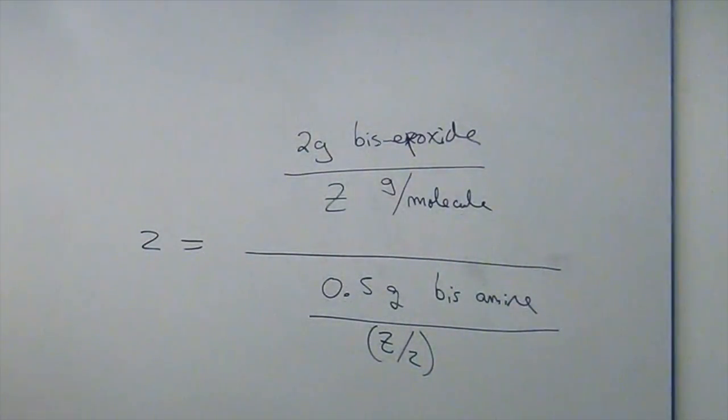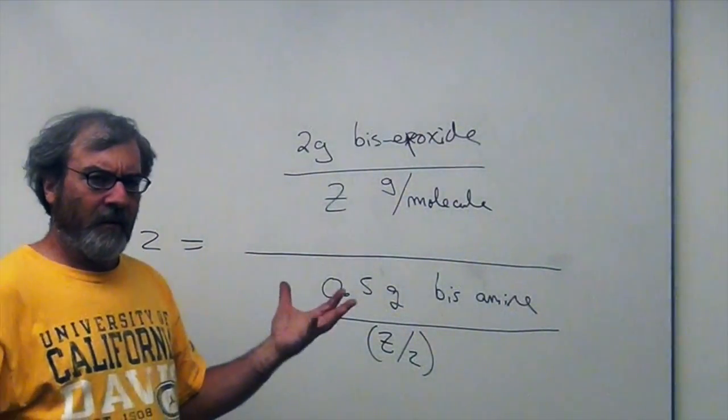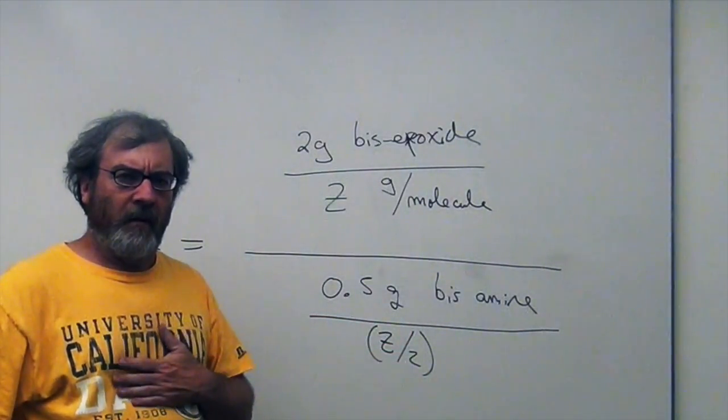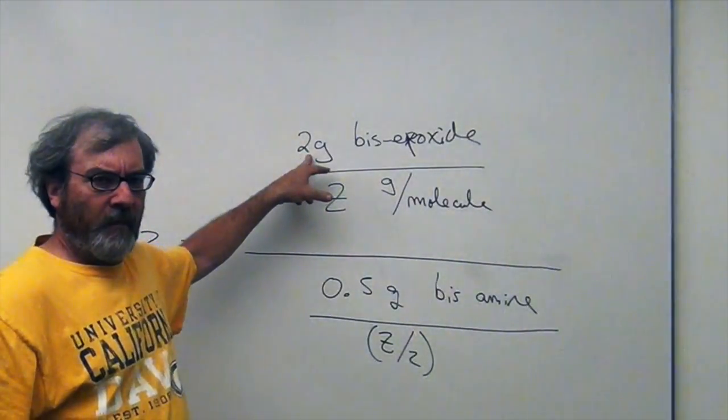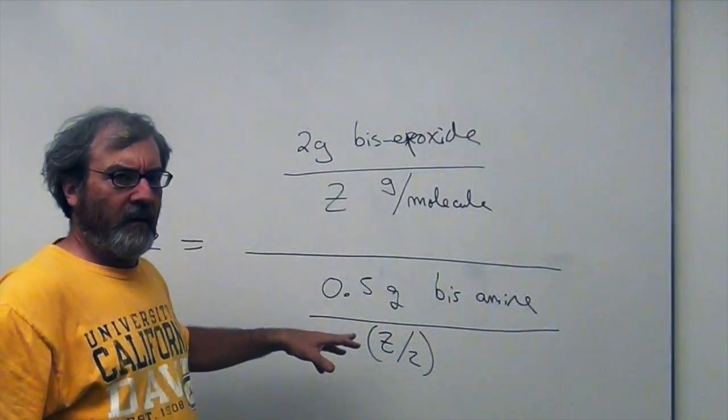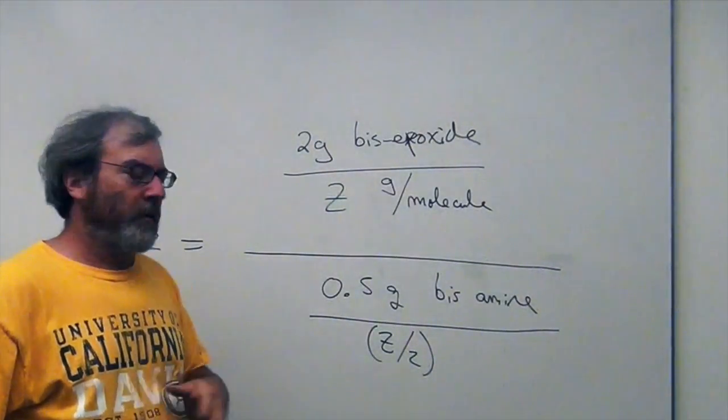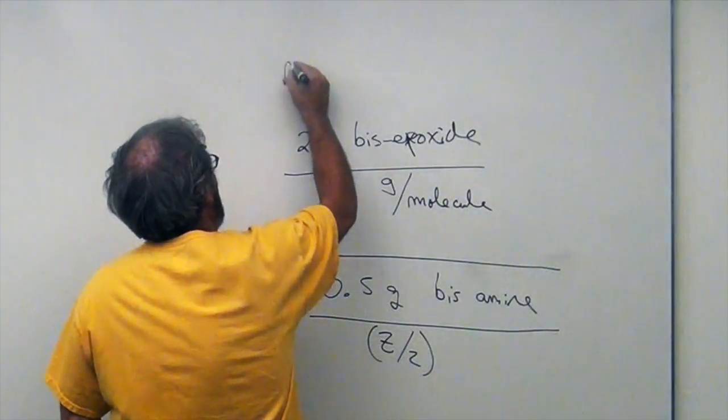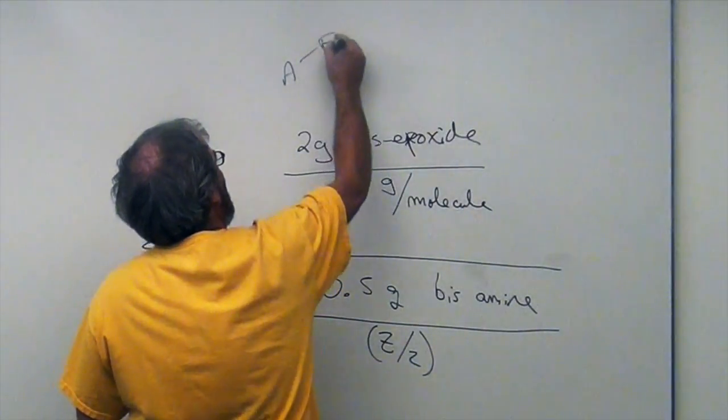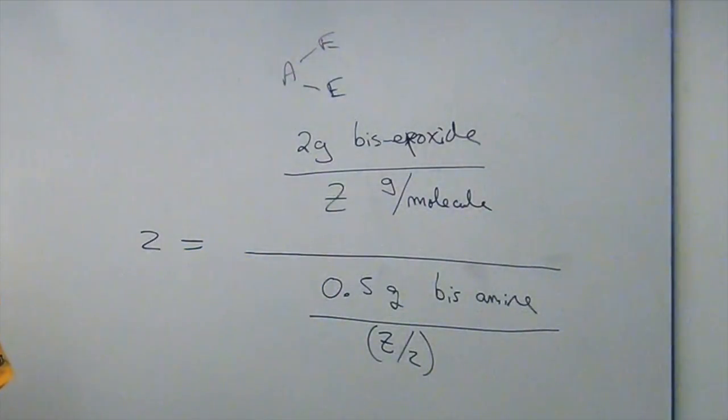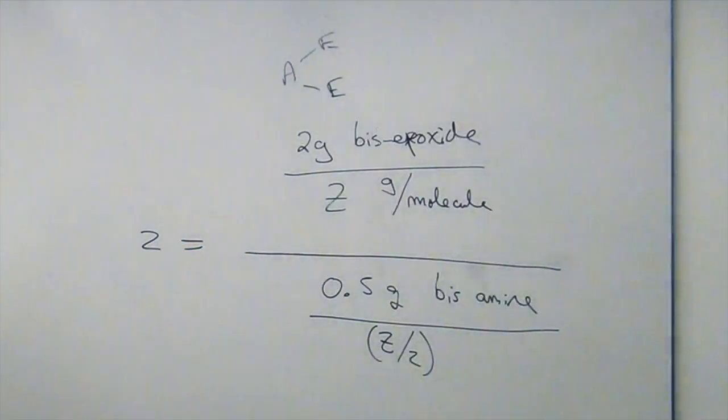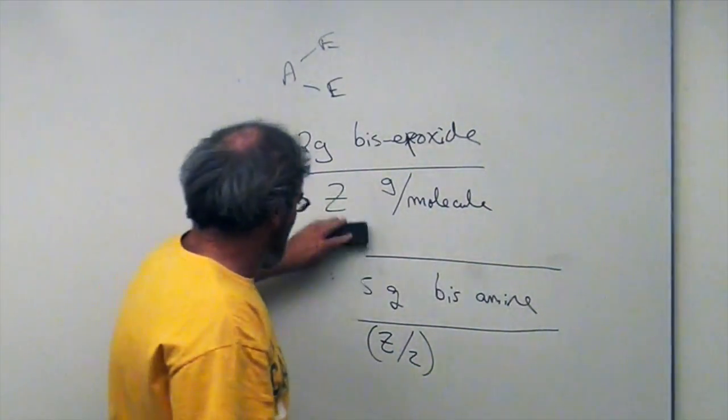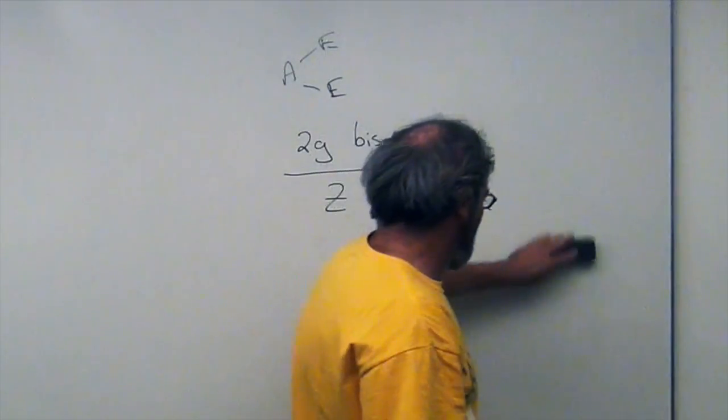So, in fact, even though the hardener is roughly 50% bis-amine by weight and 50% thinner by weight, when we add twice as much weight of bis-epoxide to hardener, we're really adding twice as many bis-epoxide molecules as we are adding bis-amine molecules. And that's what we want, because remember, every A reacts with two Es. So we need twice as many E molecules as we have A molecules. So now you can explain to your surfer friends in the bar why we mix epoxide in this 2-1 ratio. It's based on the chemistry.